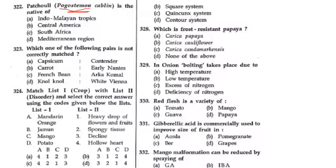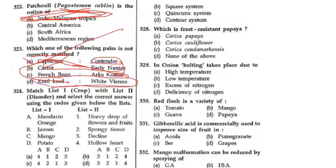Which one of the following pairs is not correctly matched? Obviously, Contender is French bean का variety है — Capsicum का नहीं है, so यह match नहीं करता. Carrot — Ellinath, that's true. French bean — Komal और Contender. Knol-khol — White Vienna, oh yes, it's correct, because Knol-khol ज्यादातर Vienna और Austria में भी खाया जाता है, बहुत popular है.